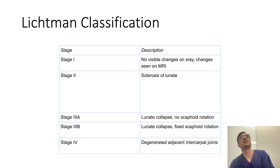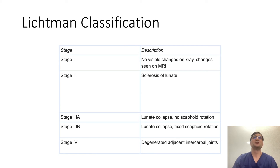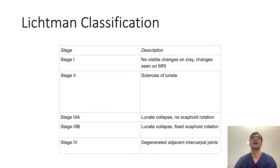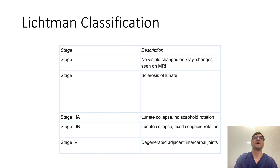The Lichtman classification is the gold standard classification used for the disease, and all stages are radiological. In stage one, you'll have symptoms consistent with Kienböck's disease, however there'll be no visible changes on X-ray — this is where MRI comes into play, because you can see changes on MRI. In stage two, you will see some sclerosis of the lunate. Stage three is where the lunate begins to collapse: stage 3A is lunate collapse with the scaphoid and other carpal bones remaining in place, and stage 3B is lunate collapse with rotation and displacement of the carpal bones, particularly fixed scaphoid rotation on X-ray. Stage four involves significant degeneration of the adjacent intercarpal joints due to the displacement.